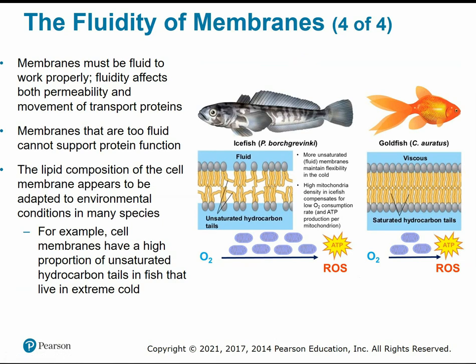Membranes have to remain somewhat fluid to work properly. The fluidity of the membrane affects its permeability — the ease with which substances can cross — and the movement of transport proteins that assist with moving things across the membrane. If the membrane is too fluid and too wiggly, it won't be able to support protein function; the proteins would essentially just float away. The composition of lipid types in cell membranes can adapt to specific environmental conditions in some species.